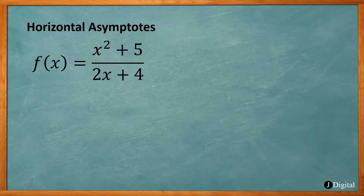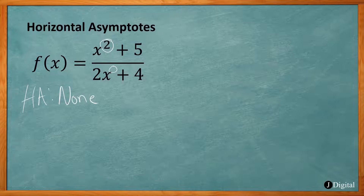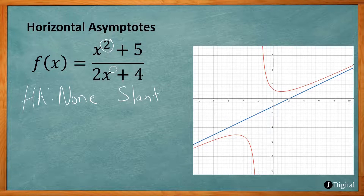For the function f(x) = (x² + 5) / (2x + 4), the degree of the numerator is 2 and the degree of the denominator is 1. Since the degree of the numerator is higher, there will be no horizontal asymptote. But we have what's called a slant asymptote. This occurs when the degree of your numerator is exactly 1 higher than your denominator. There's no horizontal asymptote, but the blue line you see on the graph is a slant asymptote.